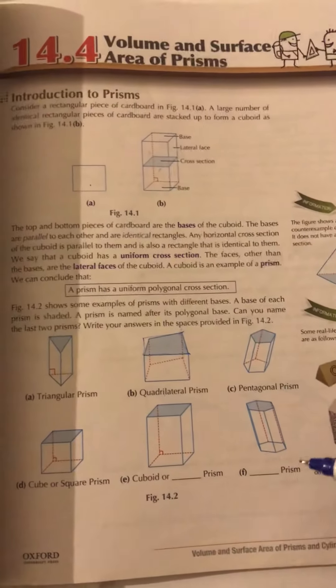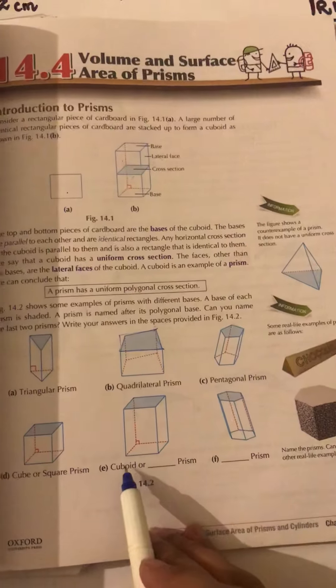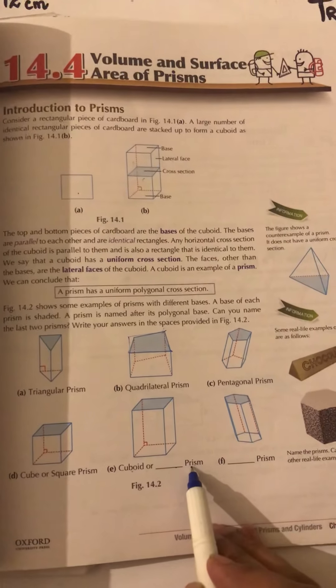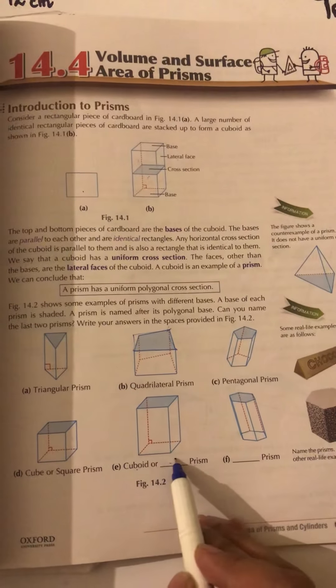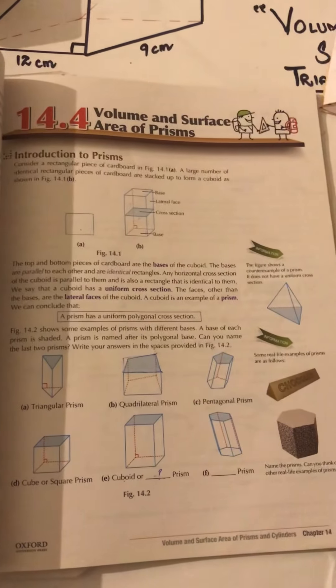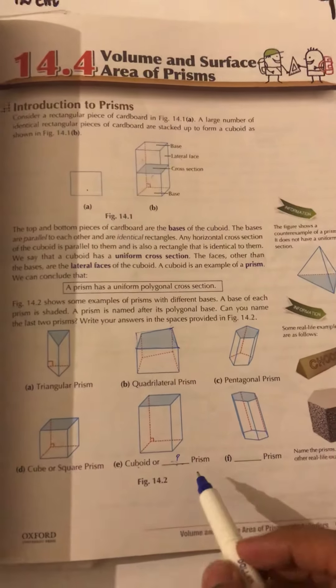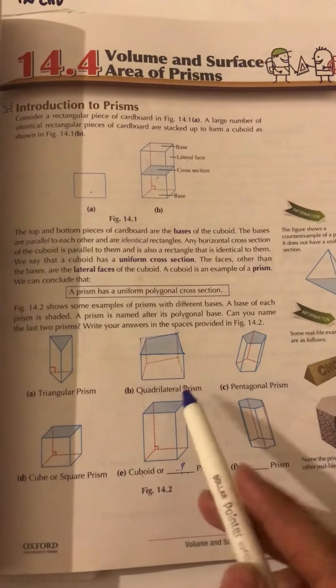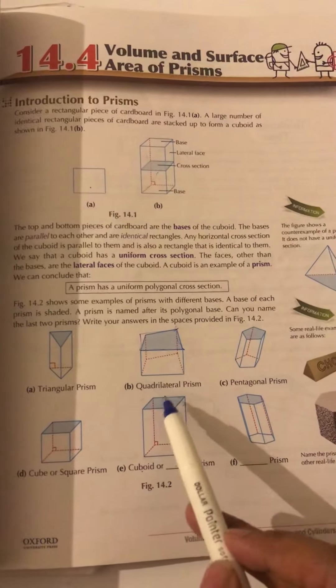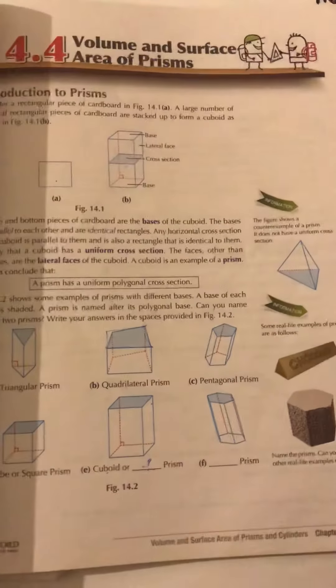Yes, cube or square prism. Cuboid or rectangular prism - what is this question mark over here? I want to know what is this question mark, but I am telling you that it is a rectangular prism. Yes, why? Because these two sides will be equal and these two sides will be equal, therefore it will be constructing a rectangular prism.